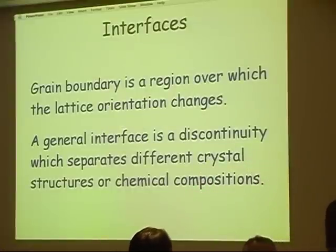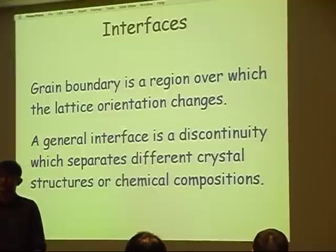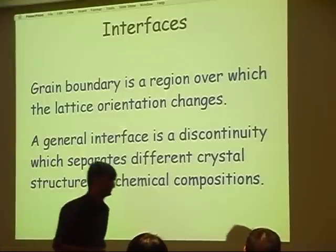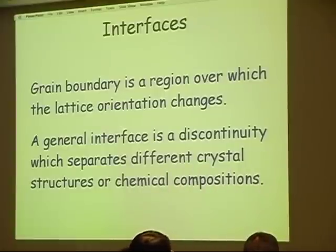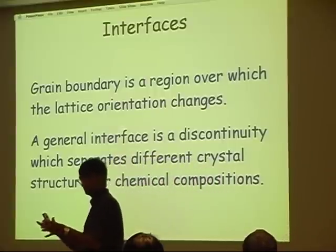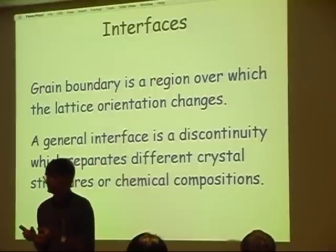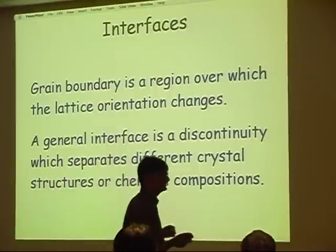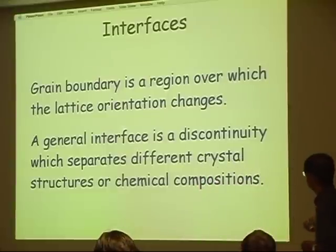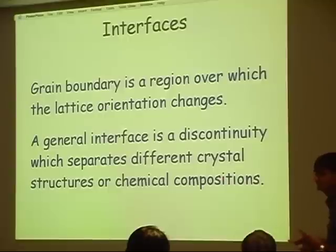Now we will look at groups of crystals, because the vast majority of materials are not single crystals, but groups of crystals. That means there are boundaries between crystals. Normally, when the boundary is between two identical crystals which have a misorientation, it's called a grain boundary. But if the boundary is between two different kinds of crystals, it's called an interface. A grain boundary is where the lattice orientation changes, whereas a general interface is a discontinuity between different crystal structures or crystals with different chemical compositions.